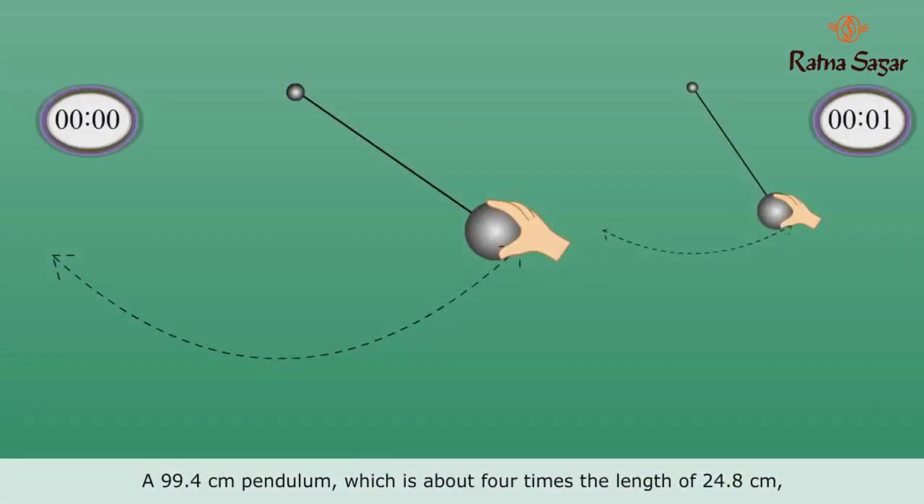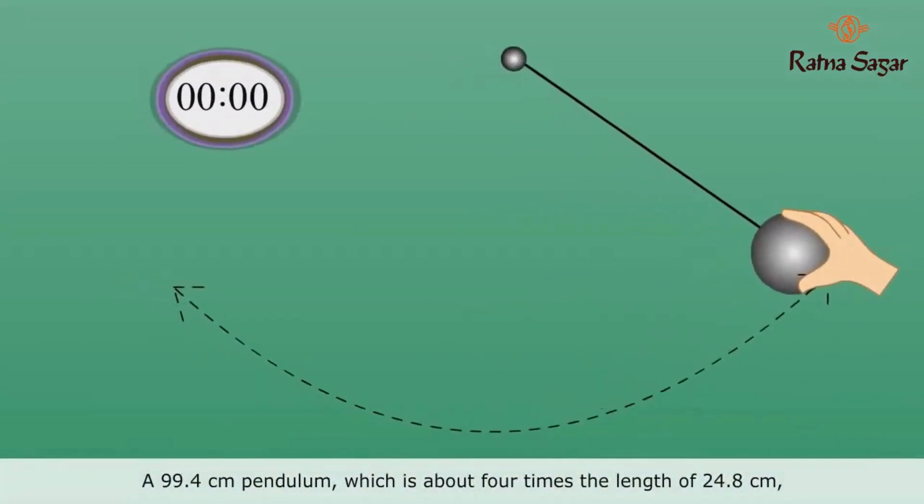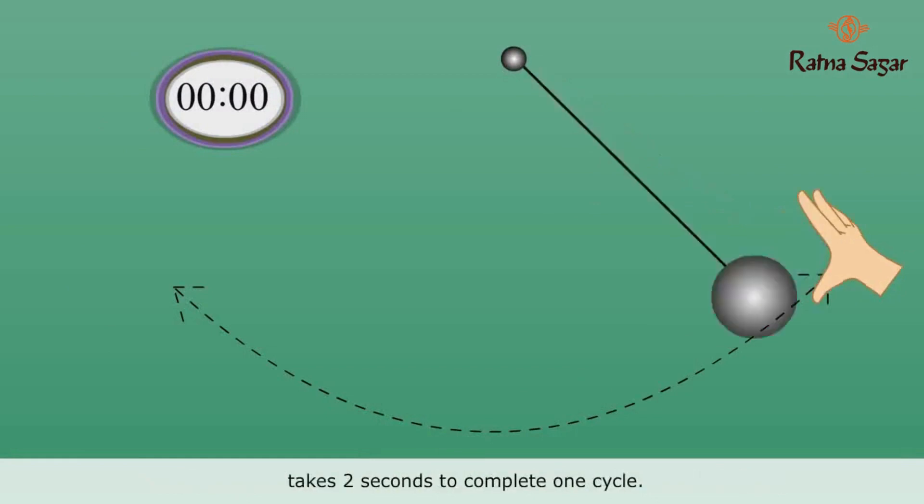A 99.4 cm pendulum, which is about 4 times the length of 24.8 cm, takes two seconds to complete one cycle.